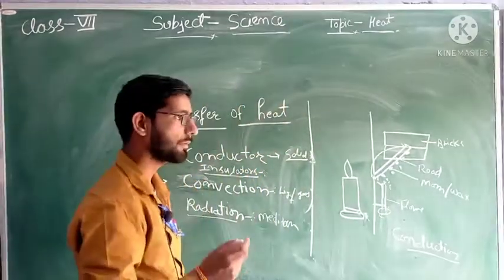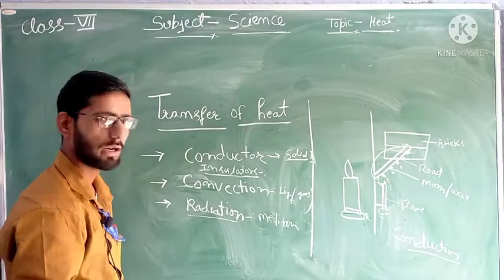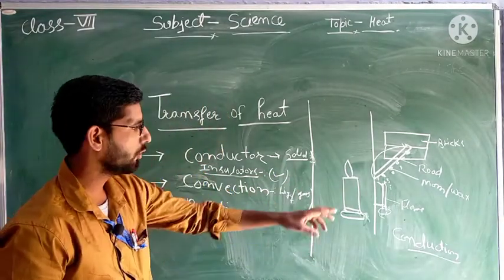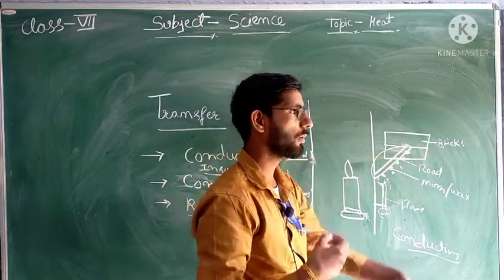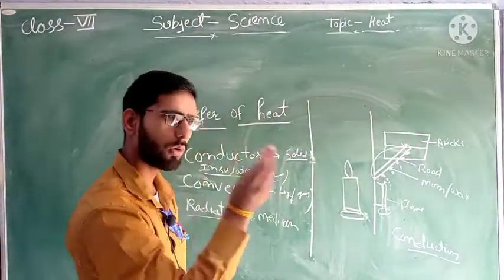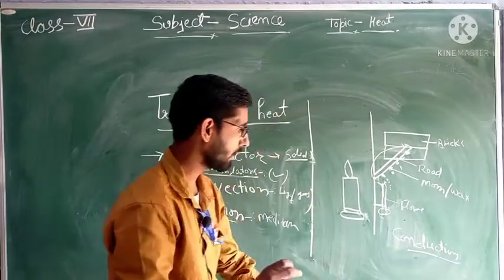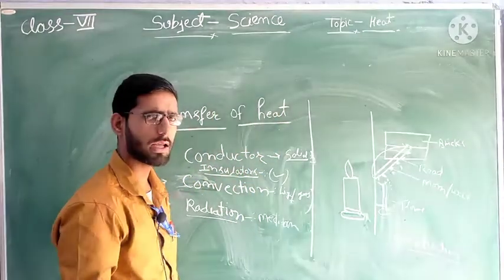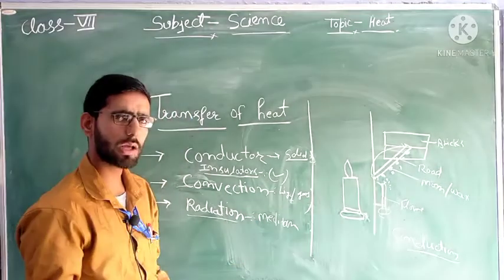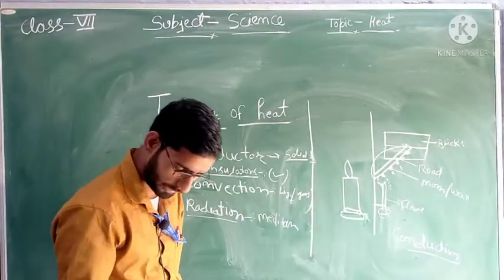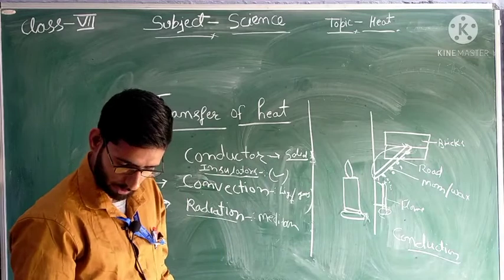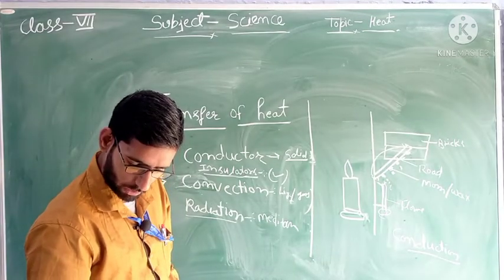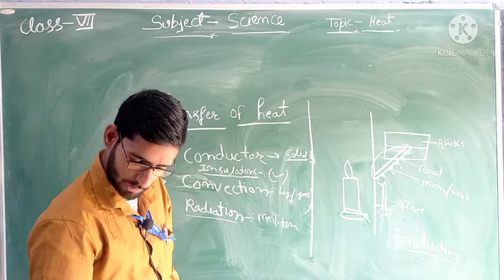Conductions - there are two types of metals. One is conductor and one is insulator. Metals which will transfer the heat are conductors. Conduction is the process by which heat is transferred from hotter to cooler in an object.